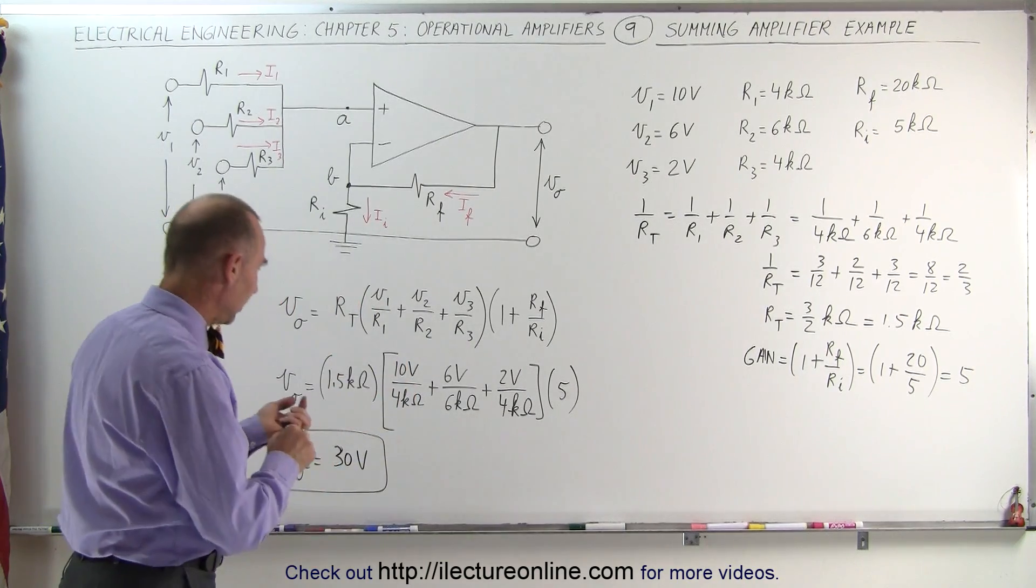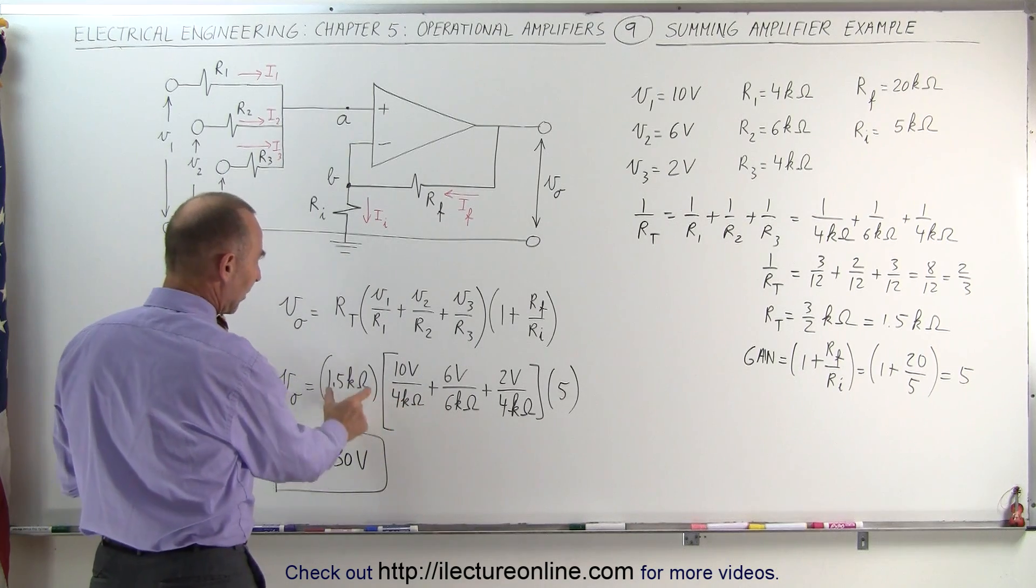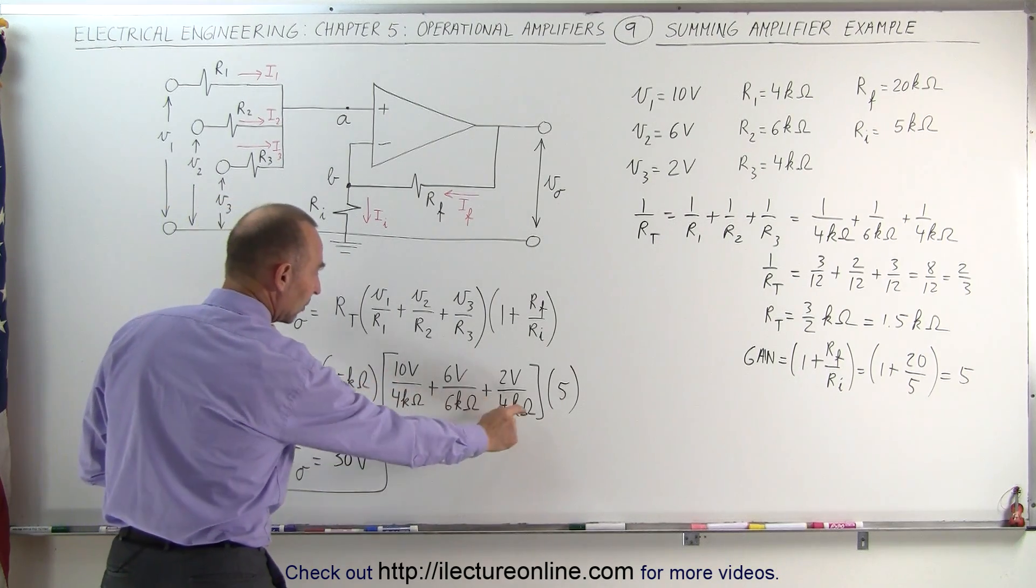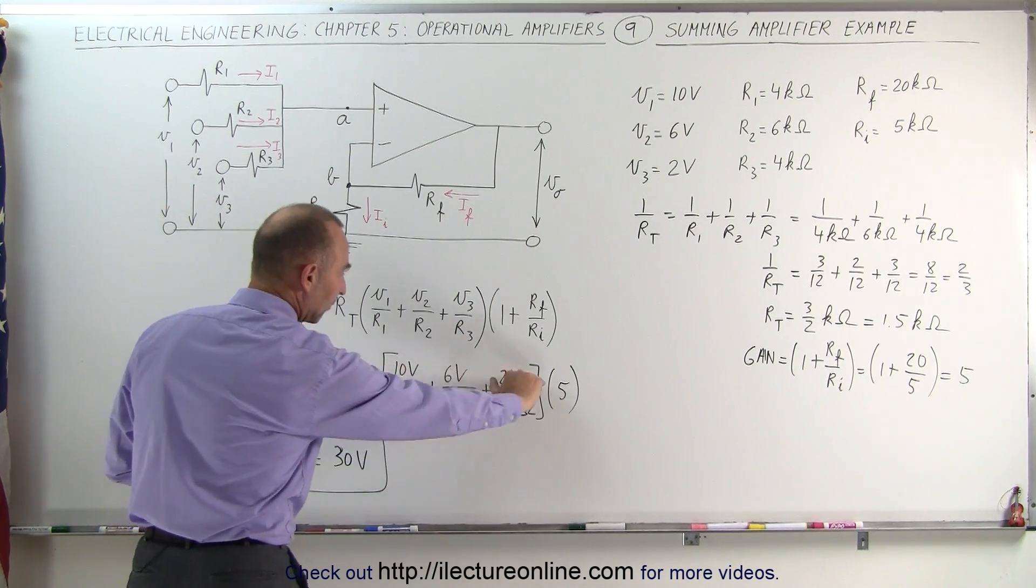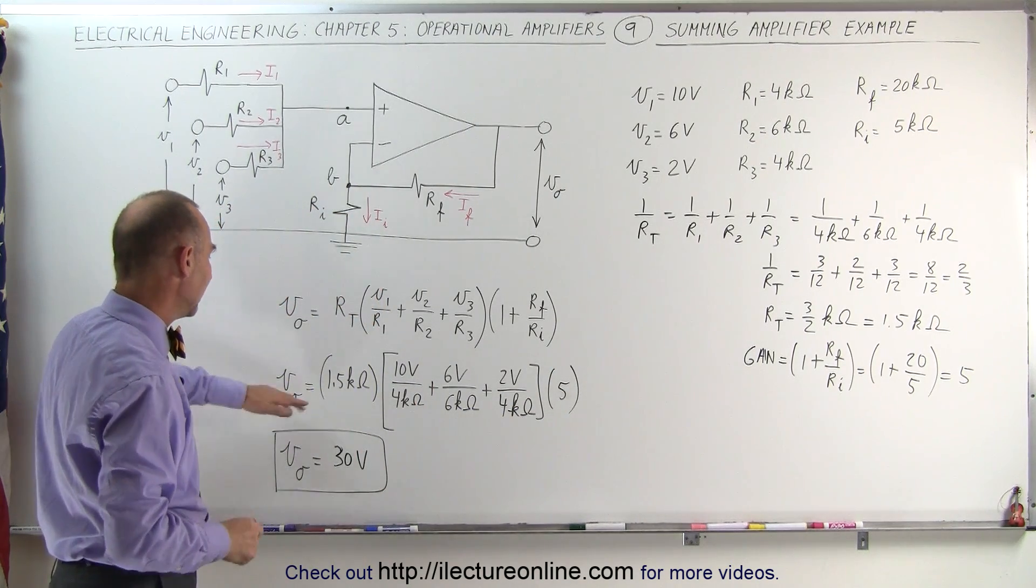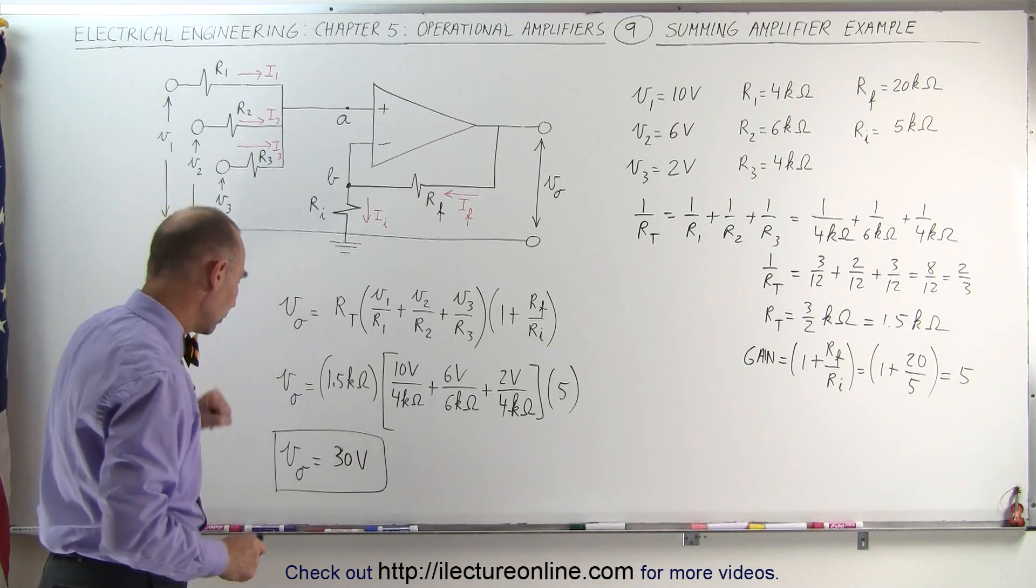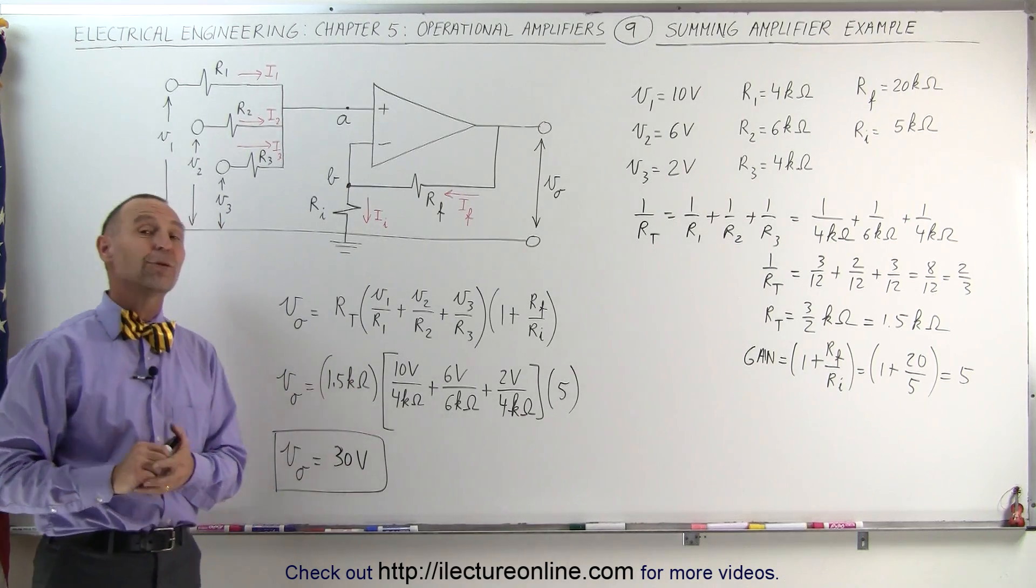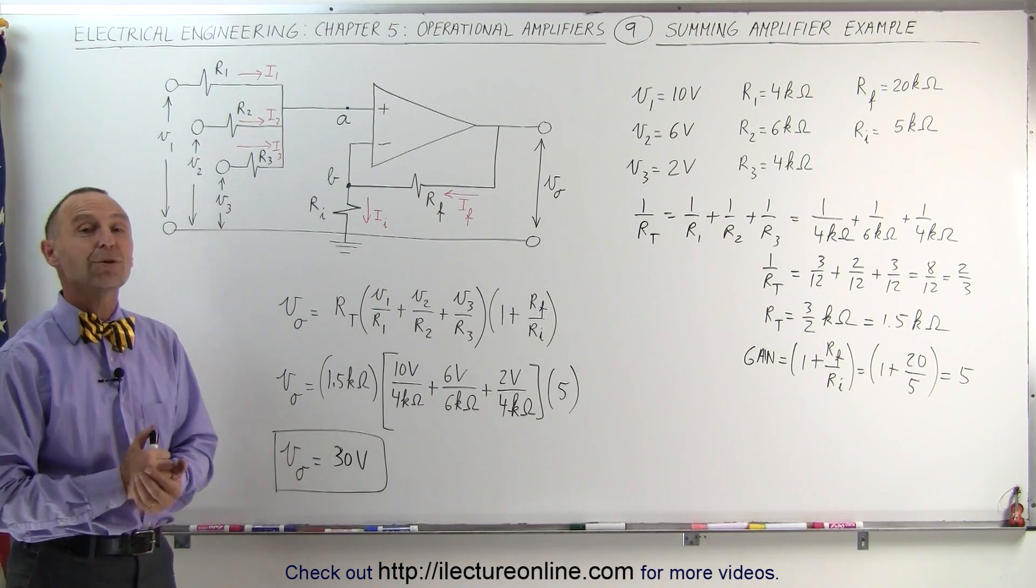All right, so again, we simply notice that the kilo-ohms cancel out, because we have kilo-ohms in the numerator, kilo-ohms in the denominator, it all cancels out. We're left with volts times 5 for the amplification or the gain, and when we go through all the calculations, we have an output of 30 volts, and that's how we use that equation.